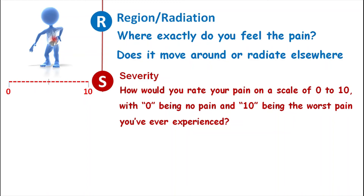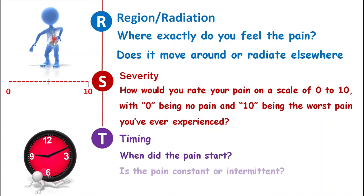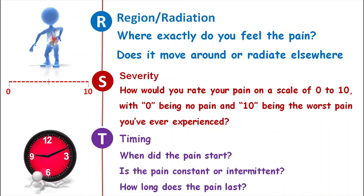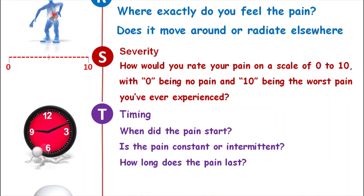T is for Timing. When did the pain start? Is the pain constant or intermittent? How long does the pain last? Have you taken anything to help relieve the pain? In simple words, here we identify the onset, duration, and frequency of pain. The PQRST method helps the nurse understand the location of pain, its cause, quality, and intensity.